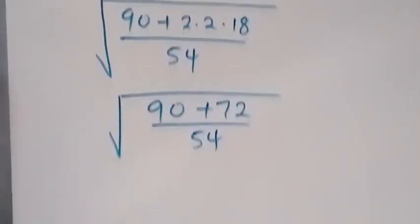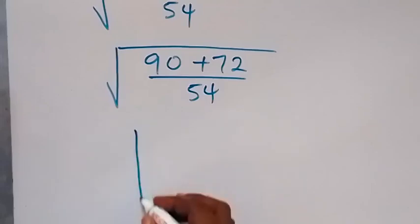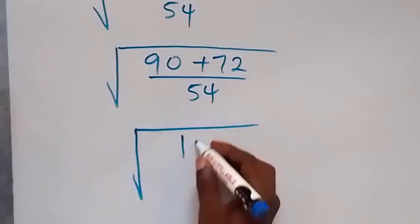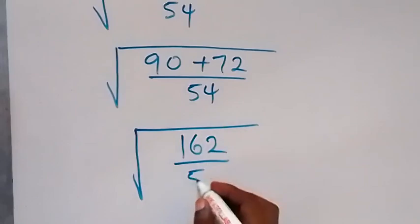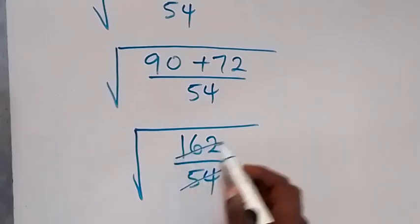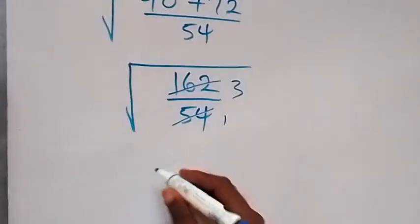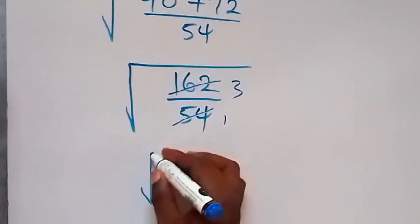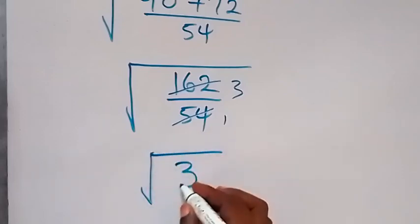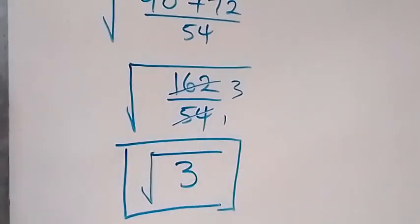Then 90 plus 72 gives us 162. So we have square root of 162 divided by 54. From here, 162 divided by 54 gives us 3. Therefore we have this simplified as simply root 3. And this is the simplified form of the problem.